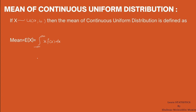Since the variable is continuous, we obtain the arithmetic mean by integrating x into f(x). As the variable x follows uniform distribution over a to b, the range of x is from a to b. Hence the limits of integration change to the integral from a to b of x f(x) dx. We know that f(x) is the PDF of continuous uniform distribution, which is 1 divided by (b minus a).